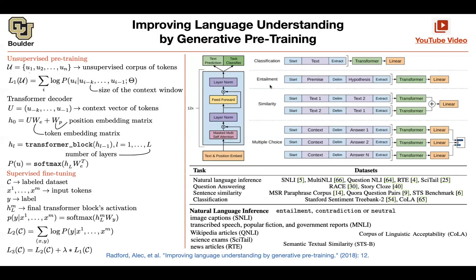You can have other tasks such as entailment: given a premise, is the hypothesis a natural follow-up, irrelevant, or a contradiction? Then you modify your head to have three outputs. For similarity, you want to know if two sentences are similar — you push both texts through your transformer and output a linear, giving a two-way classification. For multiple choice, you give some context and ask whether each candidate answer is correct, outputting the probability that each answer is the right one using linear heads.